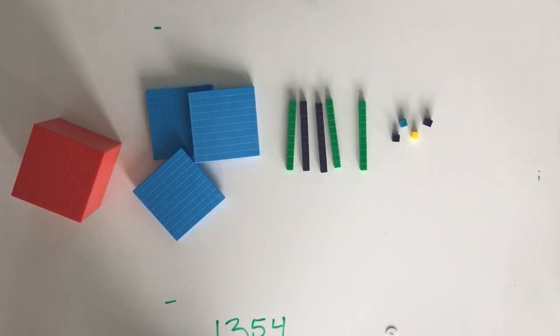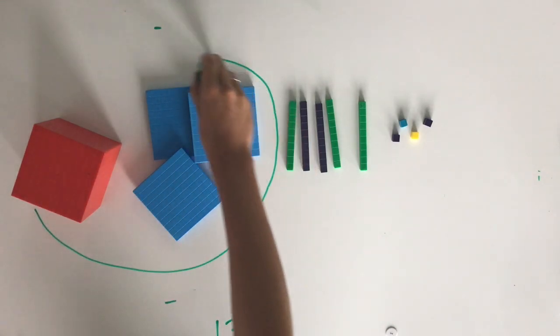Let's have a look at an example where we may need to round down. Here we have 1,354. Remember, we're rounding to the thousands place, so we're only having a look at the numbers in the thousands and the hundreds.